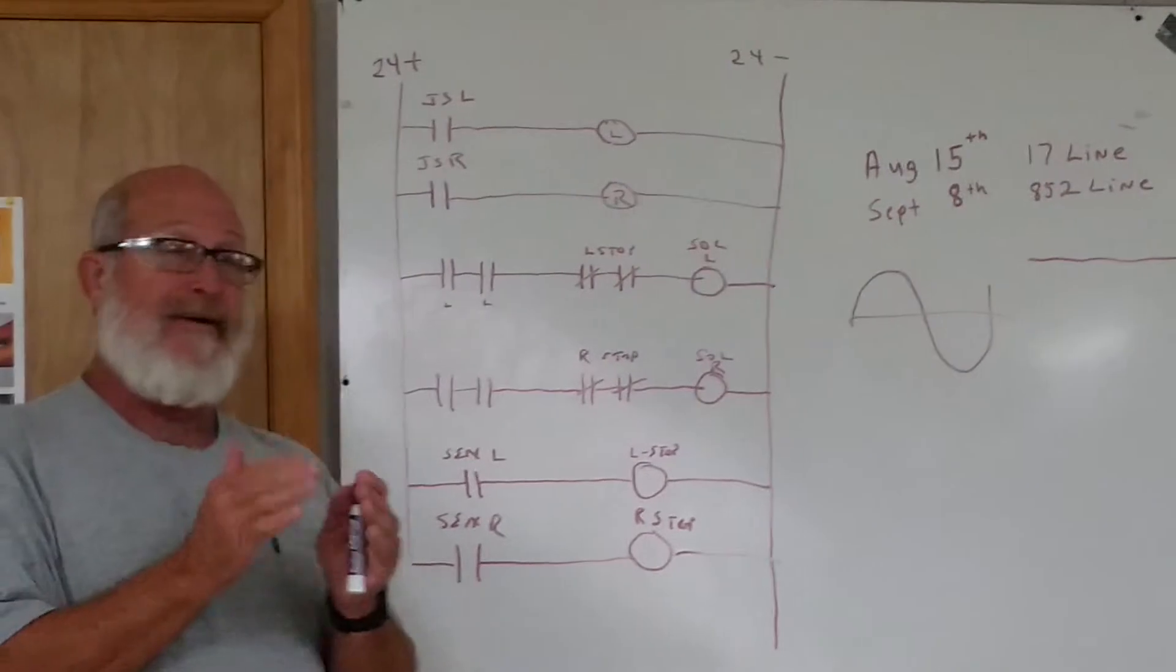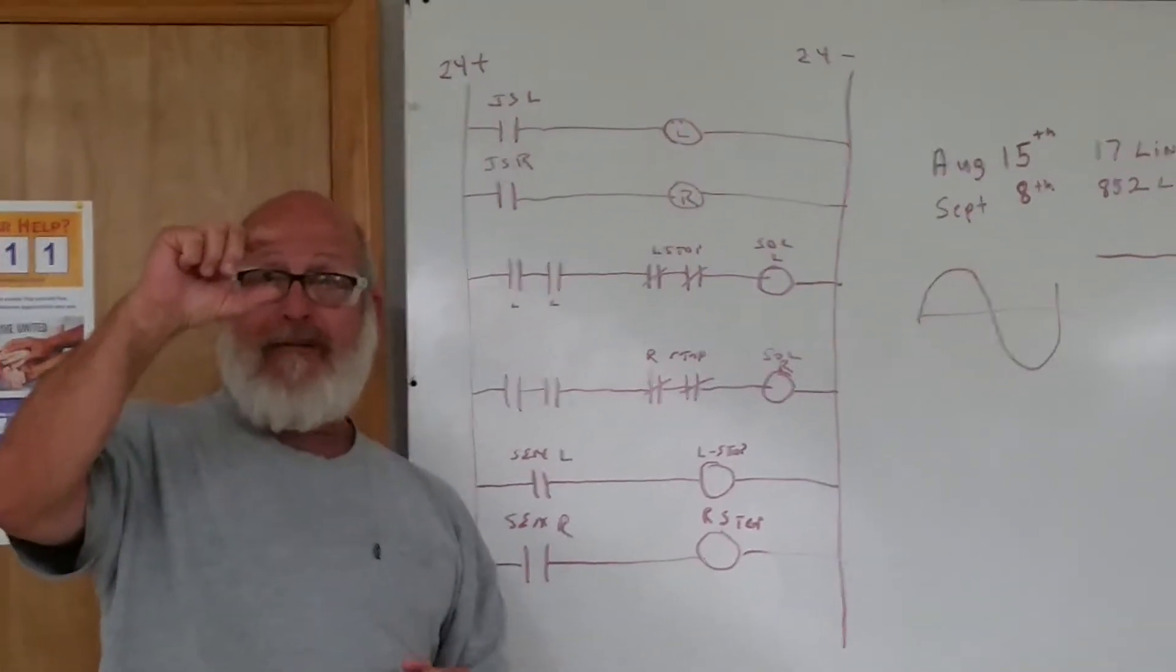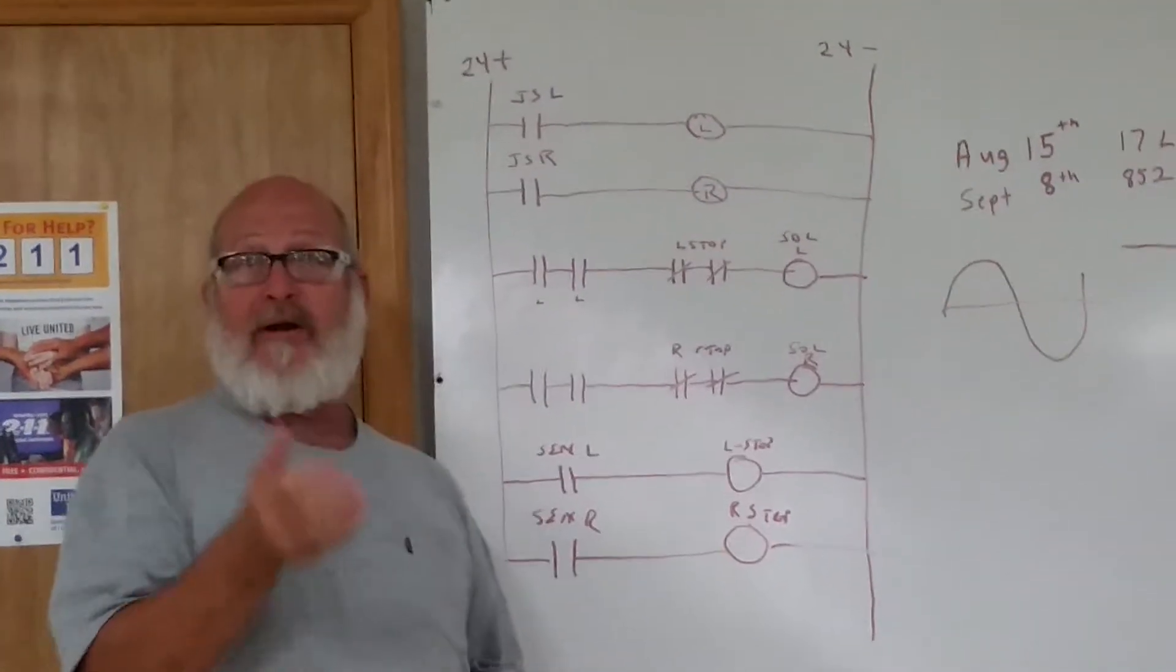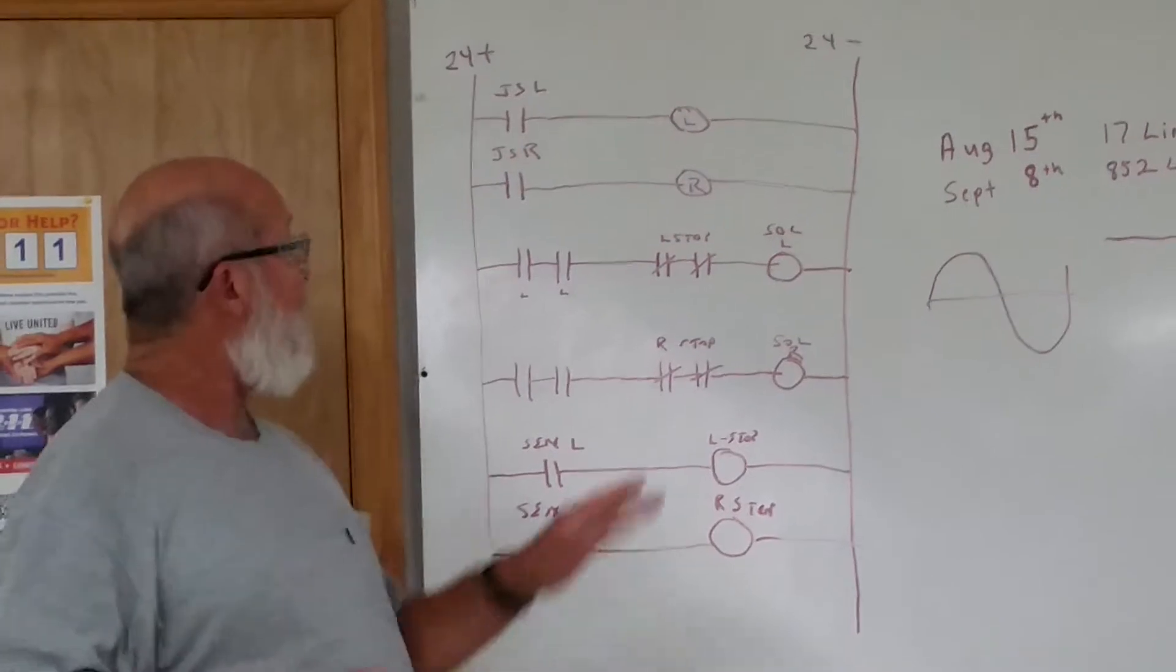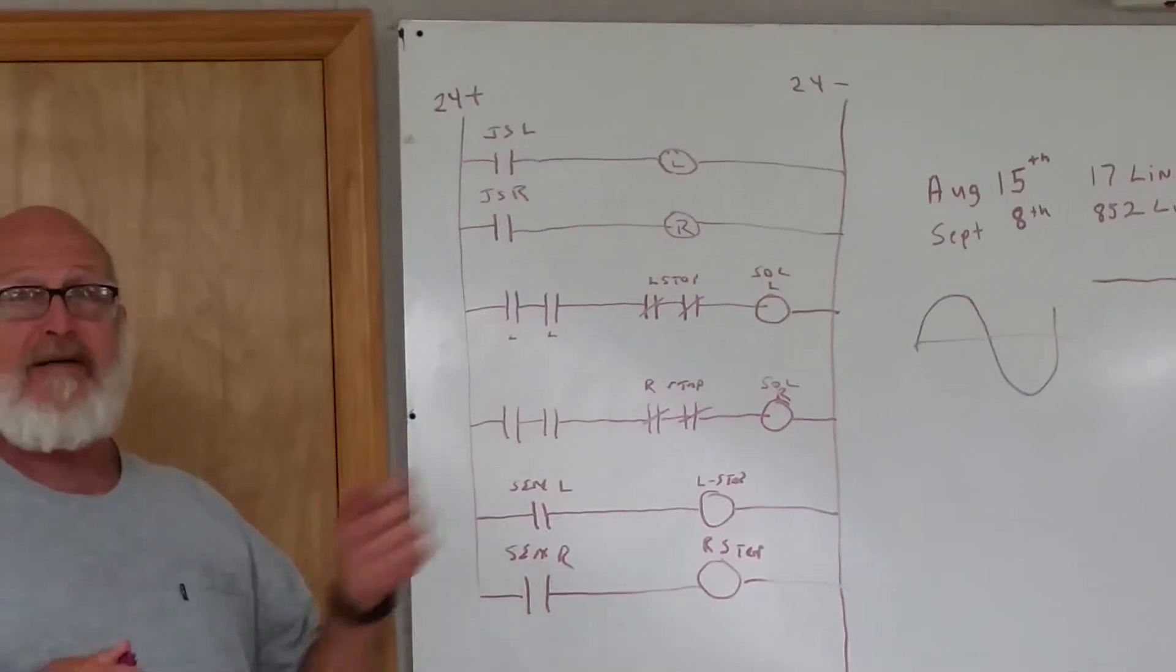If I put the contacts in series, instead of the gap being this far, if I put two of them in series then the gap is that far. So you won't burn up the contacts as fast. That's the reason for putting contacts in series on DC.